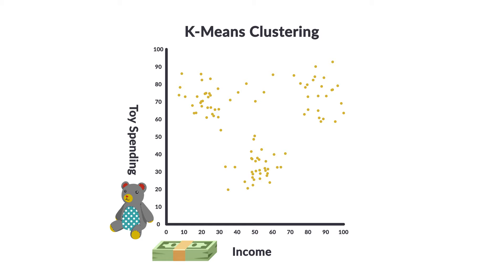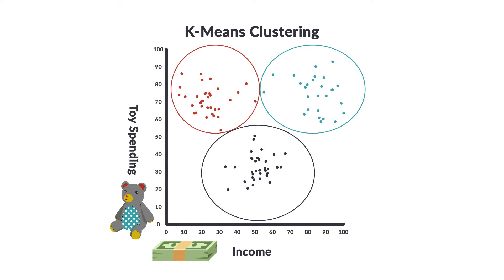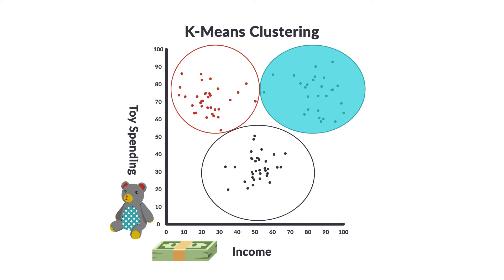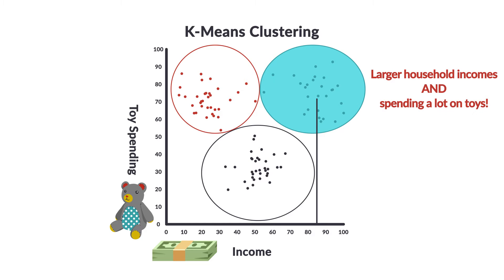Our ideal outcome looks something like this. Here we have three clusters, which feels reasonable and manageable. On the top left, we have people who don't have a very large household income but nevertheless spend a lot of money on toys. On the bottom center, we have people with a higher household income but they're not spending very much of it on toys. And on the top right, we have what we might be looking for — a group of people with larger household incomes who are spending a lot on toys. Of course, we may want to entice them to spend even more.